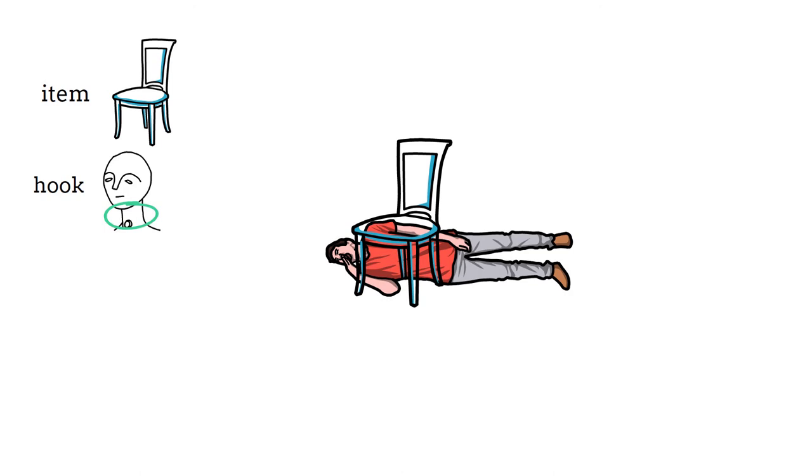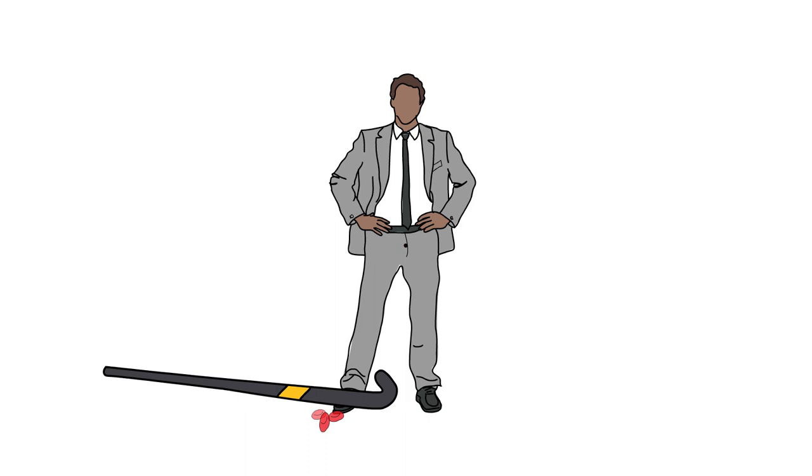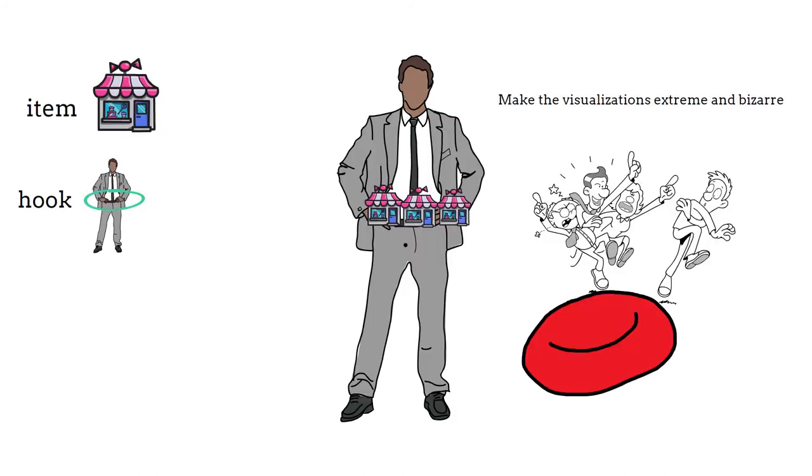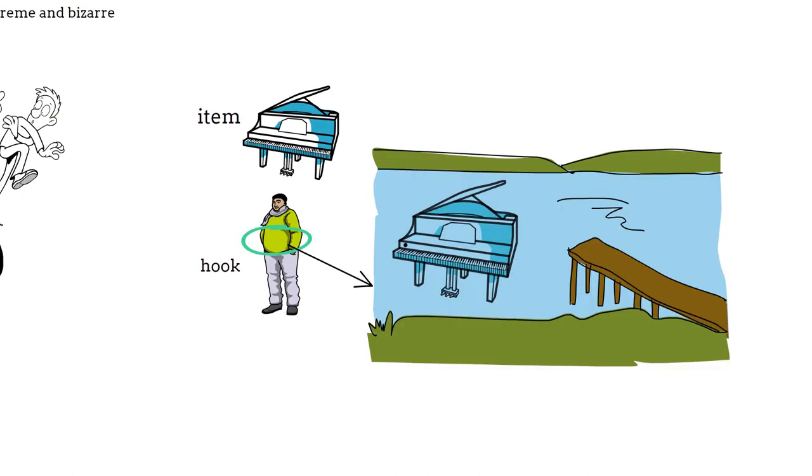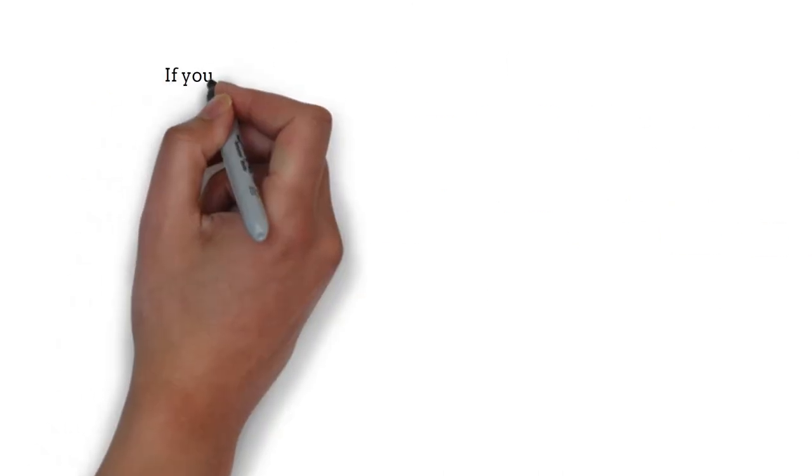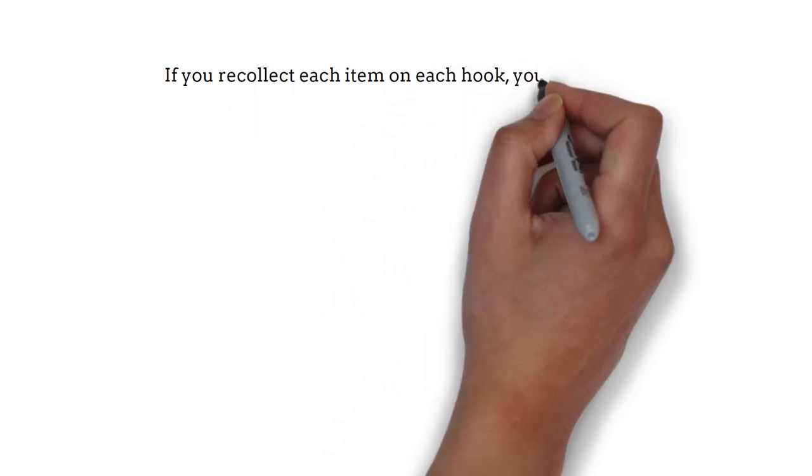Let's recap each item and each hook again. A huge hockey stick falls and severs your toes. You are dangling a gift box from your knees. There are millions of shops on your hips. A huge piano is swimming inside your belly button. A chair is pressed against your throat. If you recollect each item on each hook, you get the list.